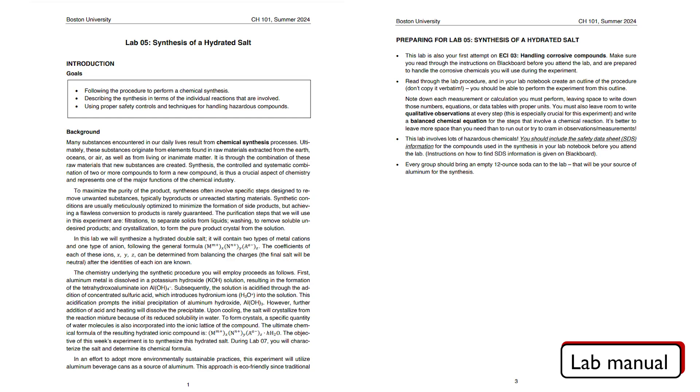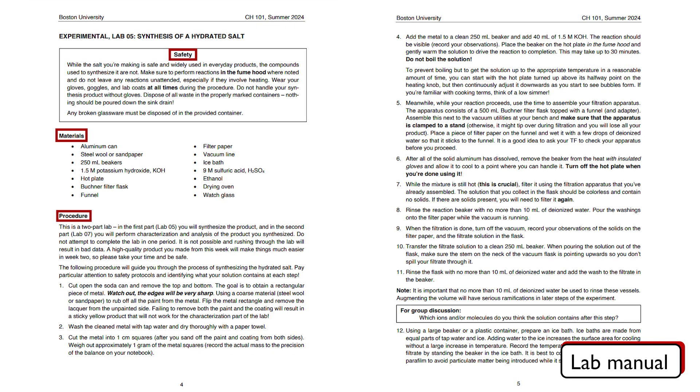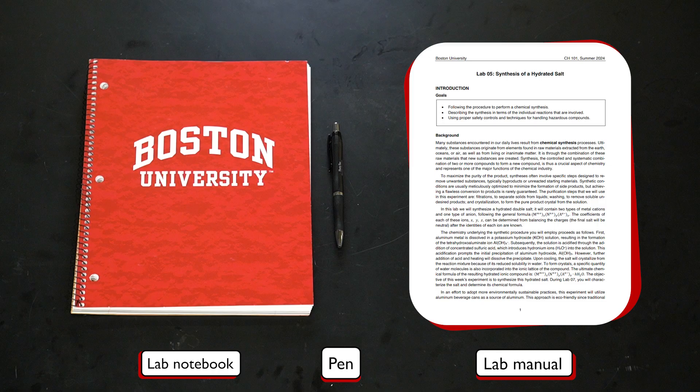The last thing we need to prepare the notebook is the lab manual or experimental protocol, which is going to be provided by the lab instructor prior to the lab. The manual includes most of the information we need to prepare for the lab, and we will talk about how to transfer the information in the manual to our notebook later in this video. Which of the following tools are required for preparing the notebook in our general chemistry lab? Remember, you will need a pen, the lab manual, and a notebook. The specific type of notebook will depend on the course.